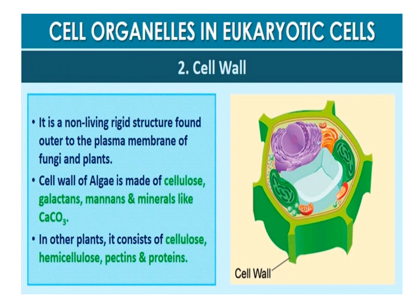Cell wall: A non-living rigid structure called the cell wall forms an outer covering for the plasma membrane of fungi and plants. The cell wall not only gives shape to the cell and protects it from mechanical damage and infection, but also helps in cell-to-cell interaction and provides a barrier to undesirable macromolecules. Algae have cell walls made up of cellulose, galactans, mannans, and minerals like calcium carbonate, while in other plants it consists of cellulose, hemicellulose, pectins, and proteins.